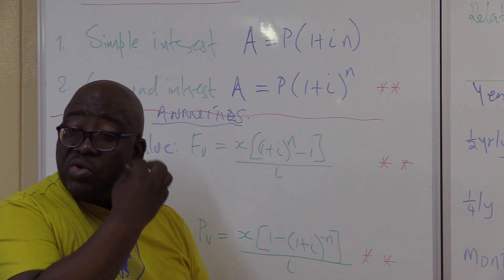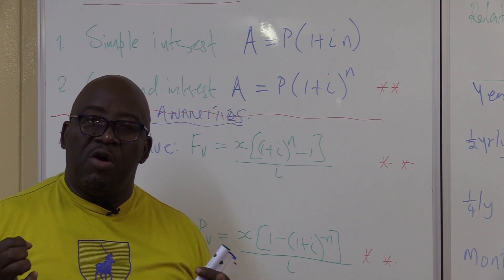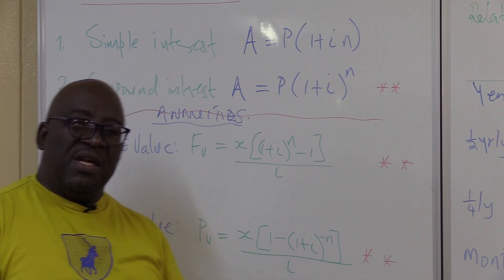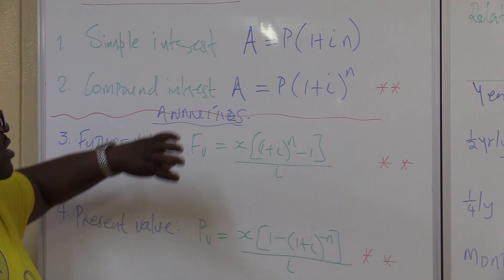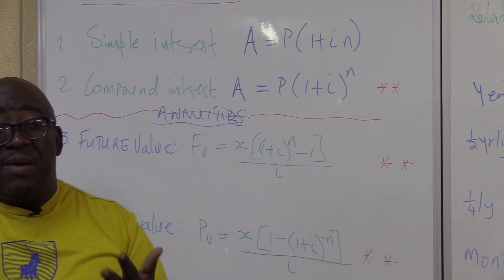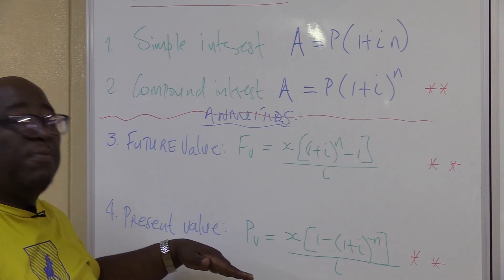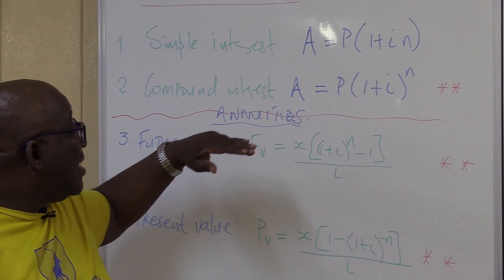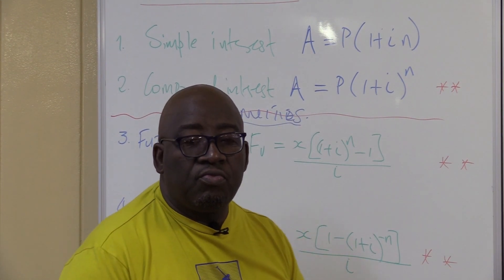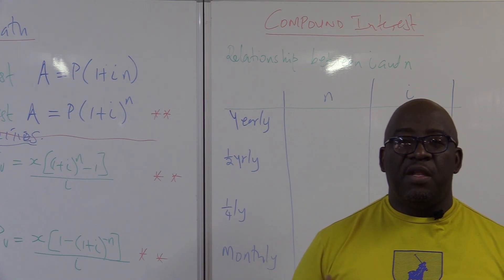Now I want us to go straight to compound interest, because you'll definitely get it in your exam. There is a relationship that happens between i and n — if we can master that, we'll be able to handle these problems. In your exam, compound interest is about 15 marks: the simple and compound interest section may be 4 to 6 marks, and the rest comes from future value or present value. When you look at compound interest, there is a very important relationship that happens between i and n.